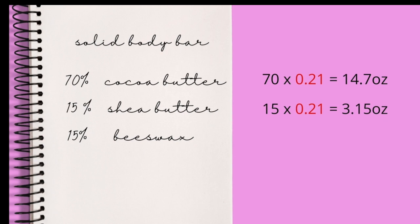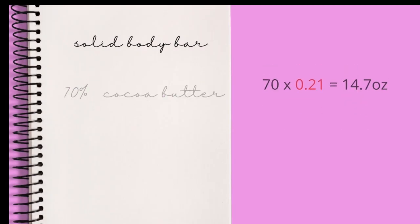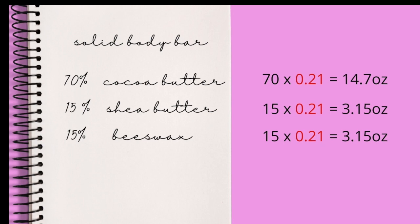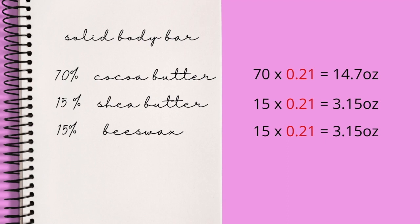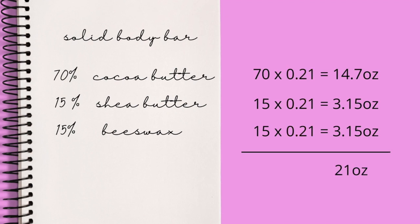The next ingredient is shea butter at 15%, so 15 multiplied by 0.21 ounces results in 3.15 ounces. The next ingredient is beeswax, also at 15%, so 15 times 0.21 ounces results in 3.15 ounces. Of course, if you sum up all these figures, you get 21 ounces — meaning our 100% that we established before.